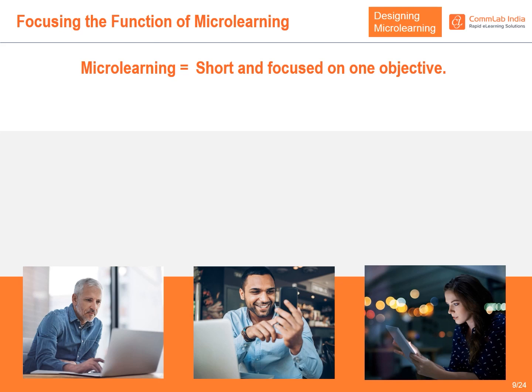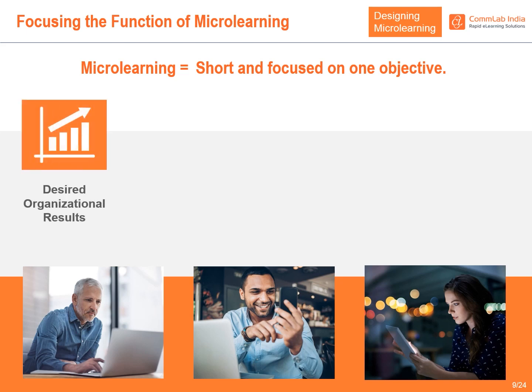To help focus the function of micro-learning, we start with clarifying the desired organizational results. This is always the first stake we put in the ground — it's how we establish alignment through our design, development, and delivery process to make sure our solutions add value to the organization.